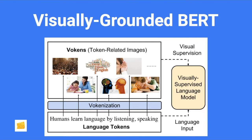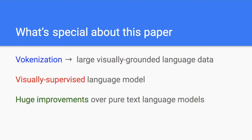The different thing is it's not only using existing visually grounded corpus — it actually creates a new visually grounded corpus by very interesting methods proposed in this paper. What's special about this paper is it proposes a vacantization process which allows you to generate a large visually grounded language dataset. It's a way to attach images to existing large language corpora so that you can perform visually supervised language modeling on those datasets.